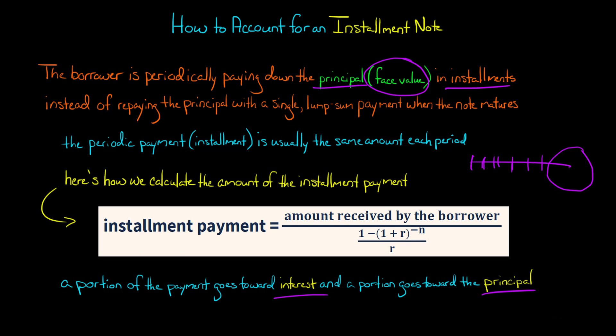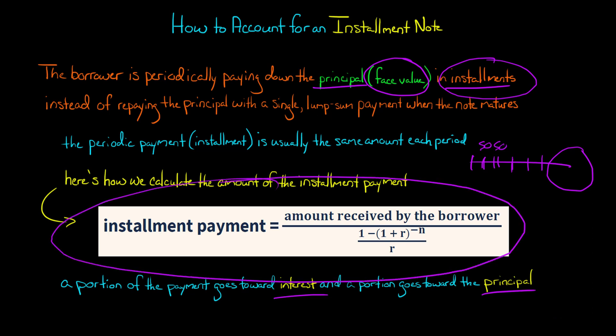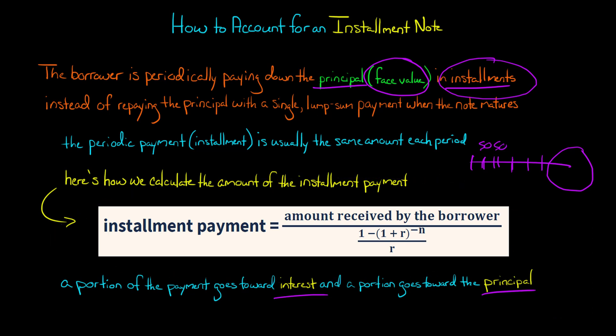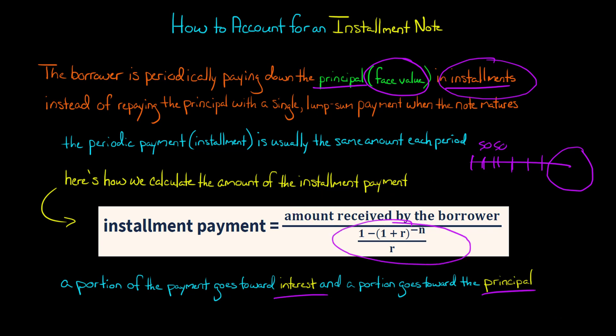This is typically going to be an equal installment payment, meaning the same amount every period — it might be $50 every month, for example. So we're going to have to calculate this periodic payment using this formula. The installment payment equals the amount received by the borrower — say $100,000 when they issue the note — divided by a denominator where R is the market rate of interest at the time the note is issued, and N is the number of periods.